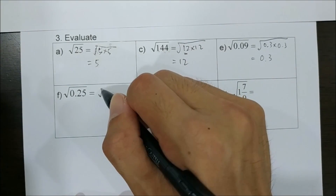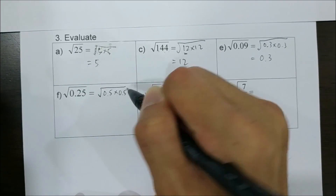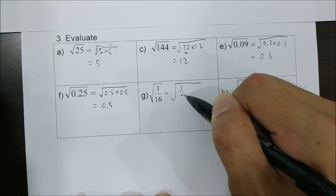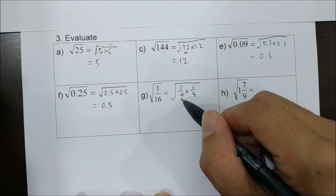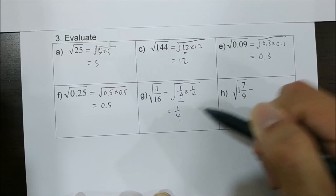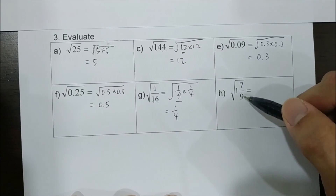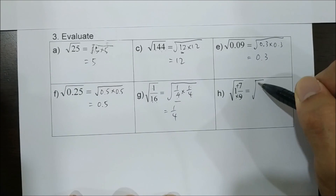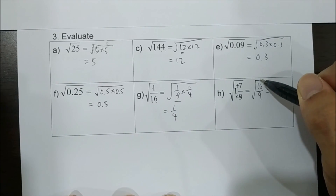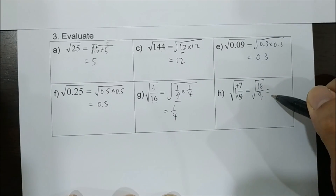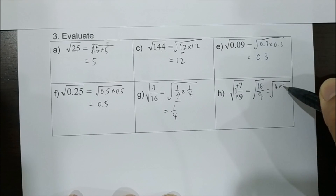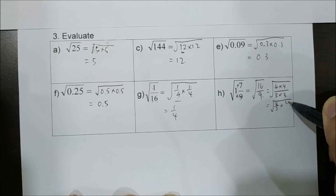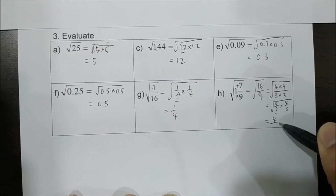Square root of 0.25 equals 0.5, because 0.5 times 0.5 gives 0.25. Square root of 1 over 16 is the square root of 1 over 4 times 1 over 4: 1 times 1 is 1, 4 times 4 is 16, so the answer is 1 over 4. For the mixed number, change it to improper fraction: 9 times 1 plus 7 gives the square root of 16 over 9. The square root applies to both numerator and denominator: 16 is 4 times 4, 9 is 3 times 3, so the answer is 4 over 3.